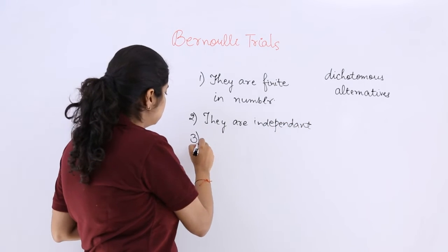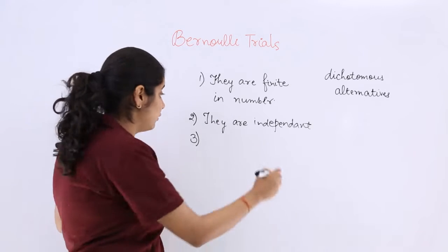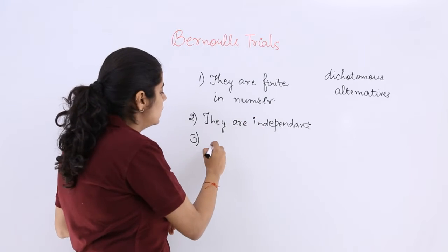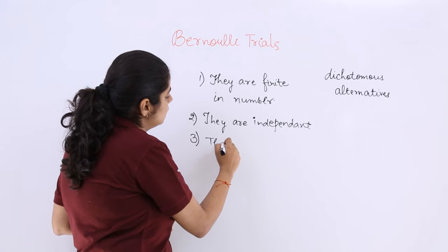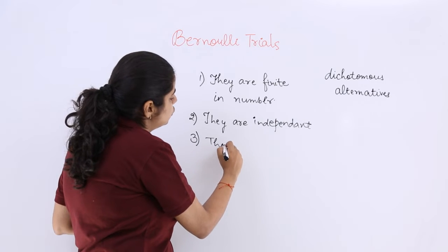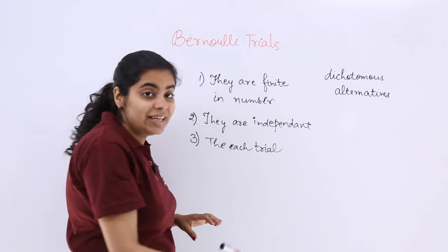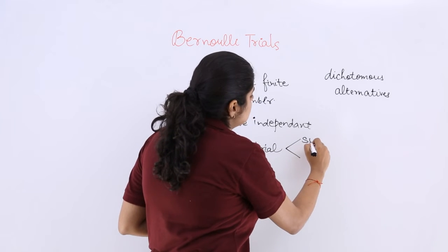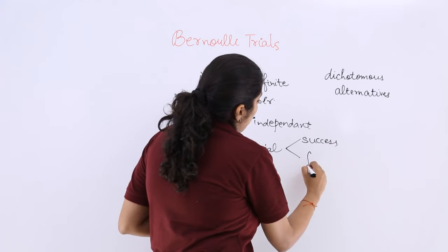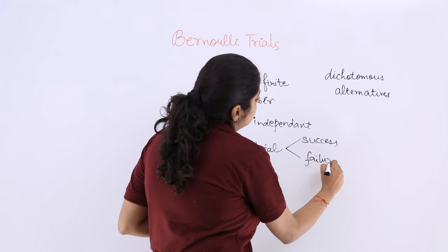The third is after you have considered they are independent, the third is each trial results in either a success or a failure.